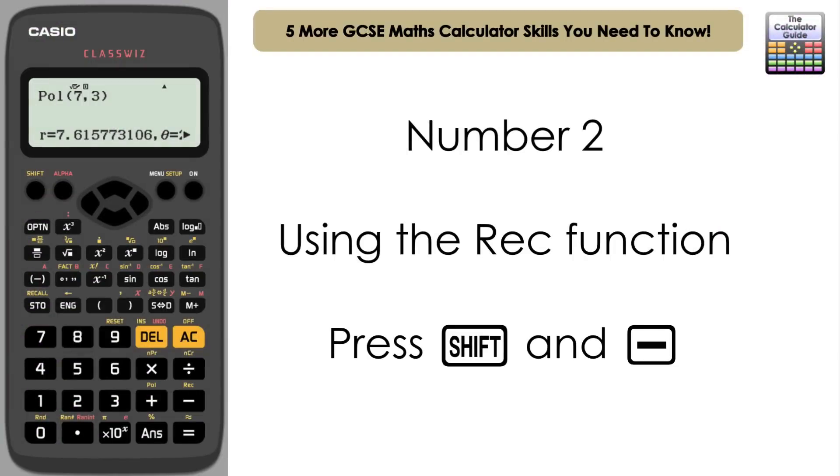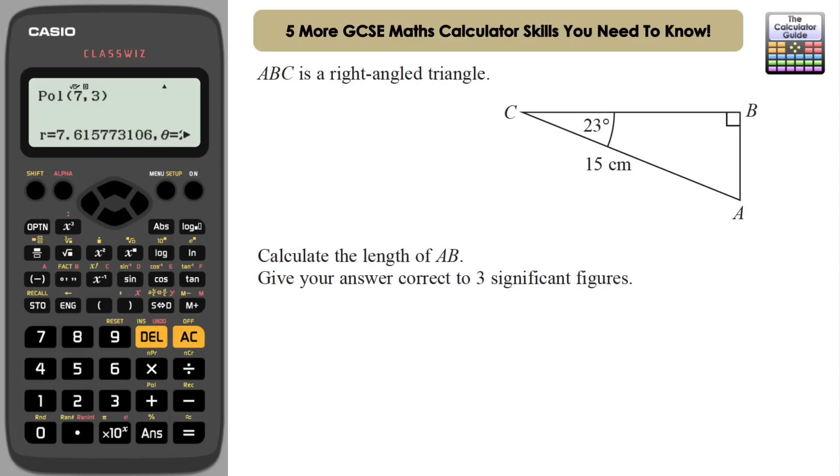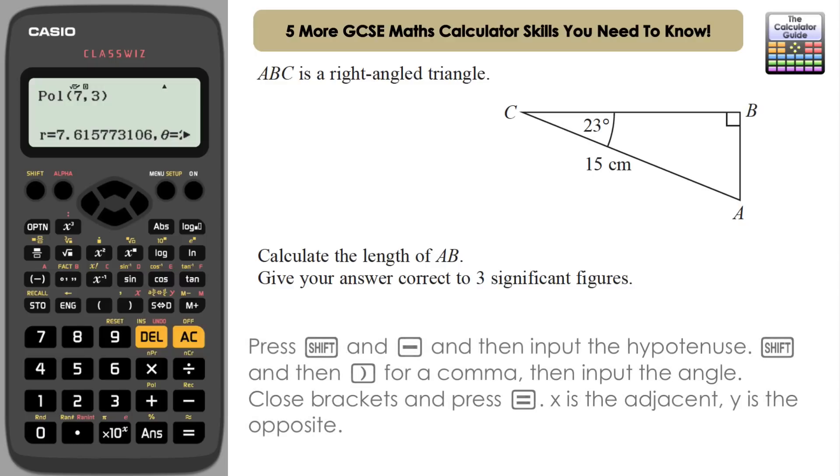The second of the two more GCSE math calculator skills that you need to know is using the related function, which is the rectangular coordinates function, when we have a hypotenuse and an angle. So this is pretty much exactly the opposite of what we've just done. So in this case, we have a right angle triangle with a hypotenuse of 15 and we have an angle there of 23 degrees. So we're going to use the rectangular coordinate function. That's shift and subtract, which gives us rectangular. And what we're going to do here is we're going to input the hypotenuse first, which is 15, shift comma, and then the angle of 23 degrees, press equals.